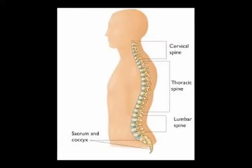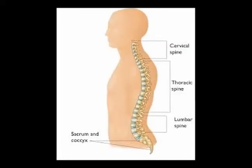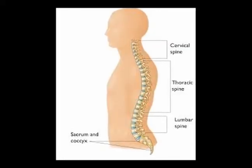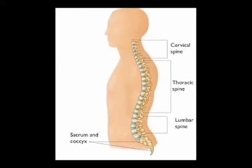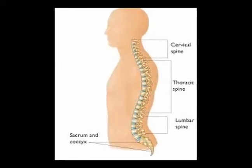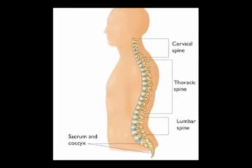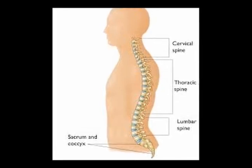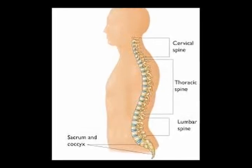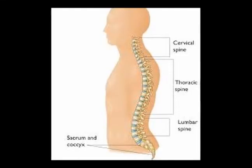The cervical spine is the medical name for the neck. The lumbar spine is the medical name for the low back. So the thoracic spine is located between the cervical spine and the lumbar spine.